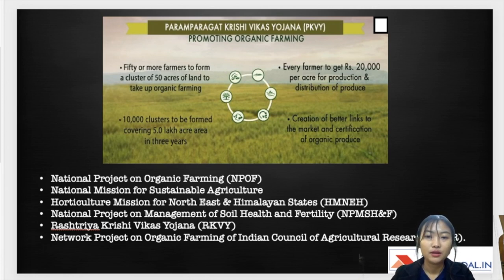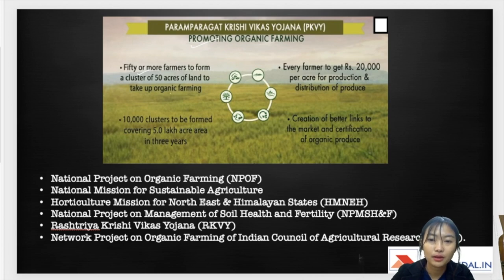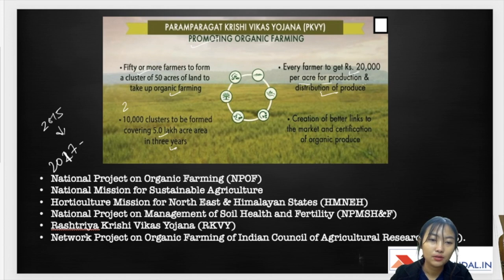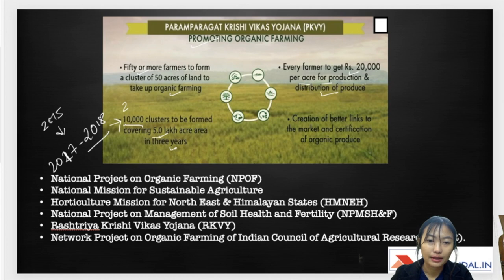Key facts about PKVY: 50 or more farmers form a cluster of 50 acres of land to take up organic farming. Every farmer gets about 20,000 rupees per acre for production and distribution of the produce. The target was 10,000 clusters covering a five-lakh-acre area within three years, i.e., by 2017–2018.